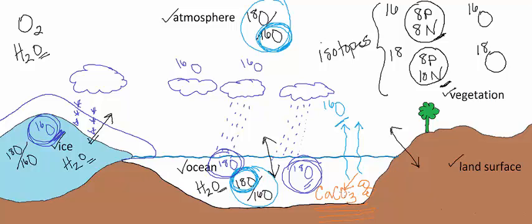And greater O18 in a marine mineral results when there is greater glaciation. And the opposite occurs during an interglacial event when ice melts.